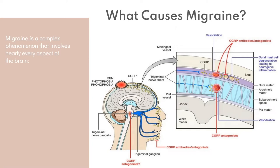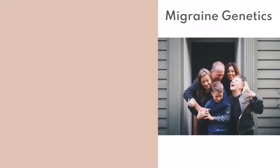One of the most important things to understand is that migraine is a complex phenomenon. It involves the genes of the brain, the blood vessels of the brain, neurotransmitters — the chemicals that allow neurons to communicate — hormones, and the electrical activity of the brain is dysregulated. Putting all of this together, this kind of perfect storm is what happens during a migraine attack.